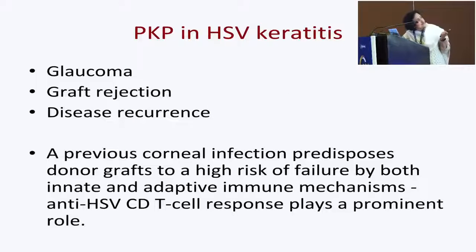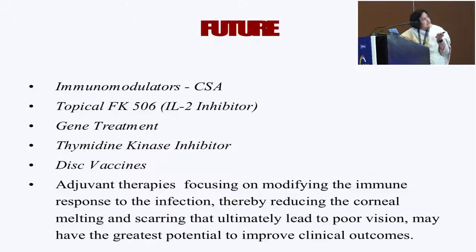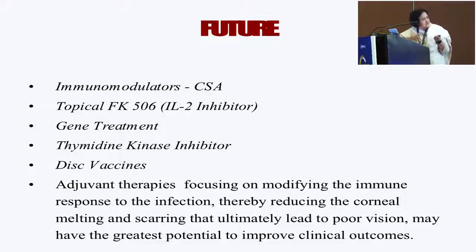Whenever I have to do a PK in HSV keratitis — I have done DALK also — there are issues of glaucoma, higher incidence of graft rejection, and disease recurrence. If you do a phaco in these cases, please put them on oral acyclovir, otherwise they can land up with recurrence after being placed on steroids or due to secondary infection. I've had patients with a small corneal scar who underwent trabeculectomy, and the surgeon had not done anything prophylactically until the patient landed up with a recurrence.